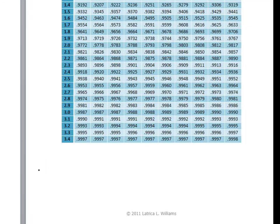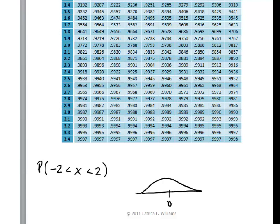We're trying to find the probability that z is between negative 2 and positive 2. I'll just draw this out on a curve, this area that's between negative 2 and positive 2.